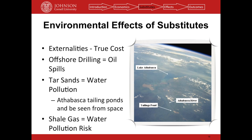If you included all the additional costs from externalities into the price of these substitutes, you might find it's just not worth it to go to them. When you buy oil made from tar sands, you're not paying for the cleanup cost of those tailing ponds 30 years from now — the government of Canada will have to pay for that.